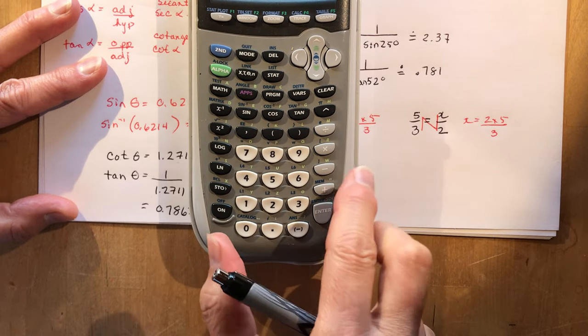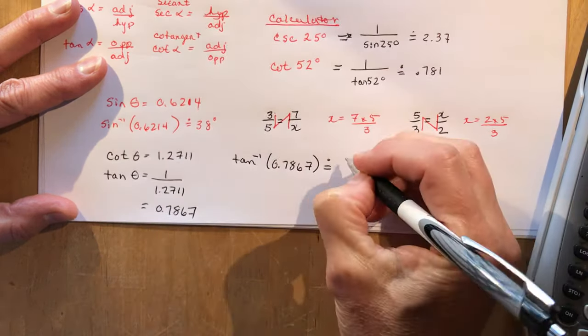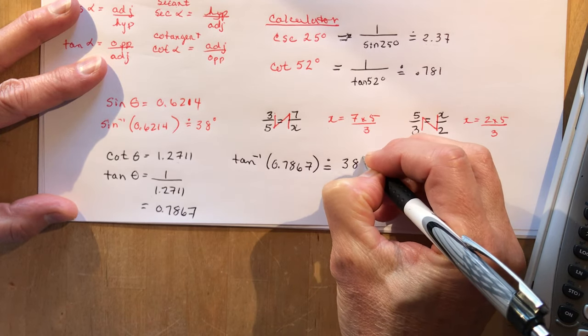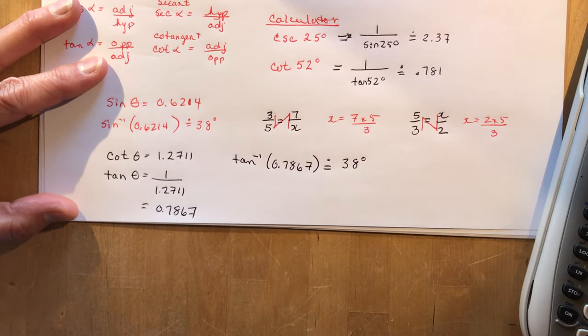Second answer equals, bam, 38, about 38 degrees. 38 degrees. 38 degrees. So those are the types of ratios they're trying to get you to do in your homework.